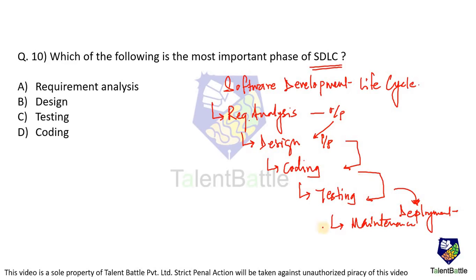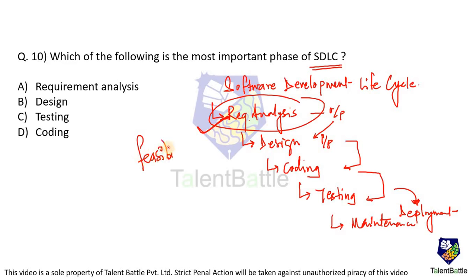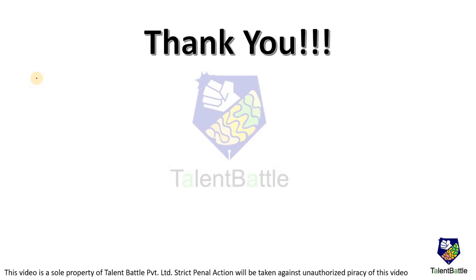If any phase is not implemented properly, problems propagate to subsequent phases. It starts from analysis — if you don't properly analyze the software requirements, the design will be wrong, coding will be wrong, and testing too. Requirement analysis is the most important phase of SDLC because here you must handle everything correctly, including the feasibility study — deciding whether the project is feasible. So option A (requirement analysis) is the correct answer. I hope you got all the answers properly. Thank you for watching, and don't forget to subscribe.